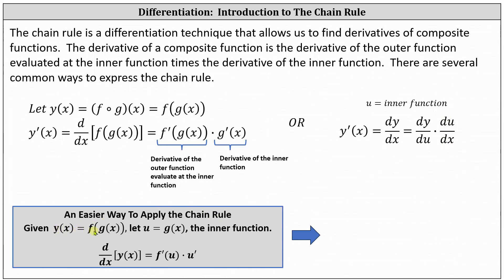An easy way to apply the chain rule, where we have y of x equals f of g of x, is to let u equal g of x, the inner function. This indicates we can write the composite function as f of u, and therefore the derivative of y of x with respect to x equals f prime of u times u prime, where f prime of u is the derivative of the outer function evaluated at the inner function, and u prime is the derivative of the inner function.